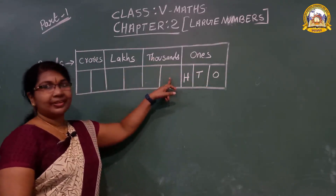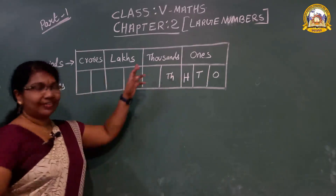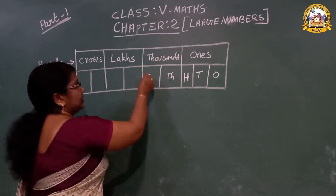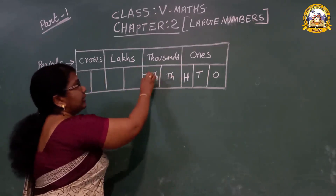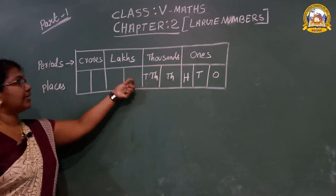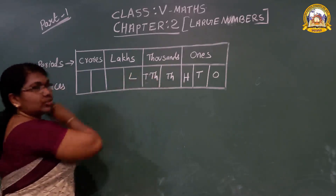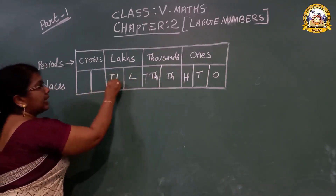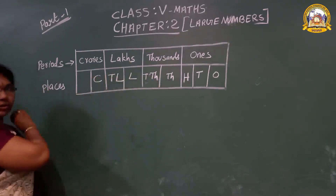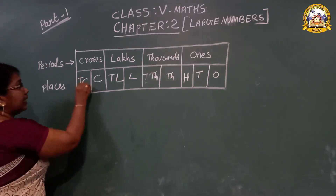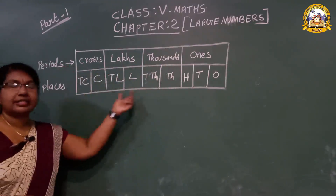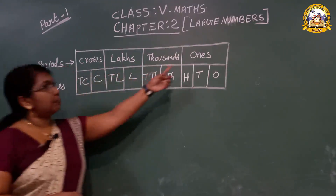This is the thousands column. What is the next column? Ten thousands. This is the thousands column, this is the ten thousands column. This is the lakhs column, this is the ten lakhs column. And next one — this is the crore column, this is ten crore. These groupings are called periods, and the individual columns are called places.